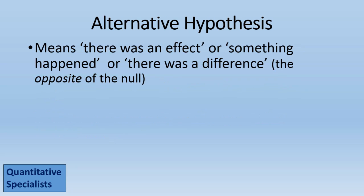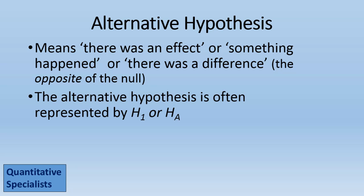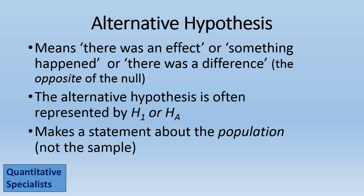The alternative hypothesis is really the opposite — it states there was an effect, something happened, or there was a difference. The alternative hypothesis is often represented by H sub one or H sub a, and it also makes a statement about the population, not the sample.